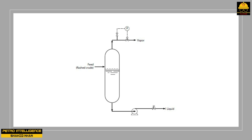At a refinery, operators had to start up a new flashed crude oil pump that had never been run before. They reported that the pump always cavitated on startup. They raised the liquid level in the drum to within a few inches of the inlet nozzle — a higher level would cause entrainment of black crude oil into the vapor outlet. They started the motor and very slowly opened the discharge valve, but regardless of their efforts, the pump cavitated so badly it could not be put in service.